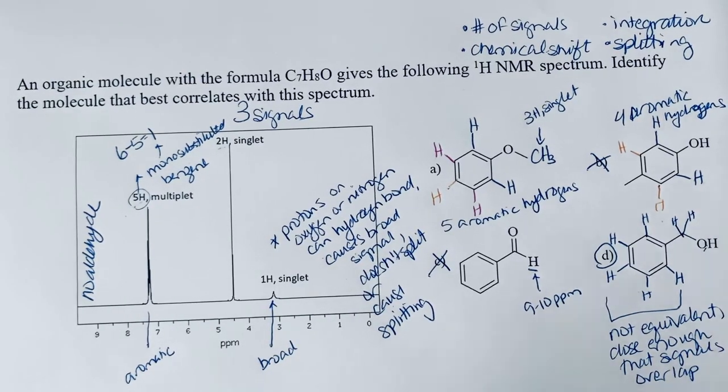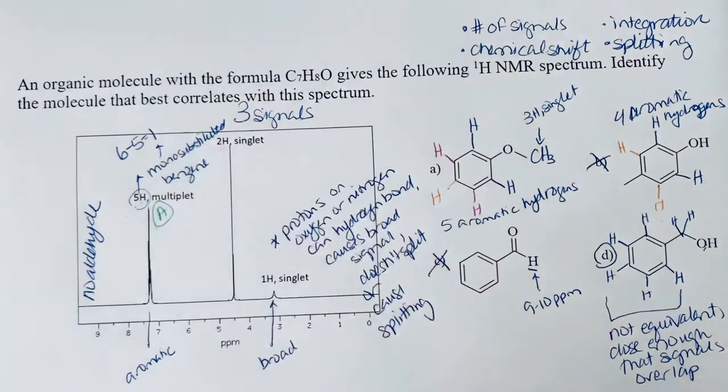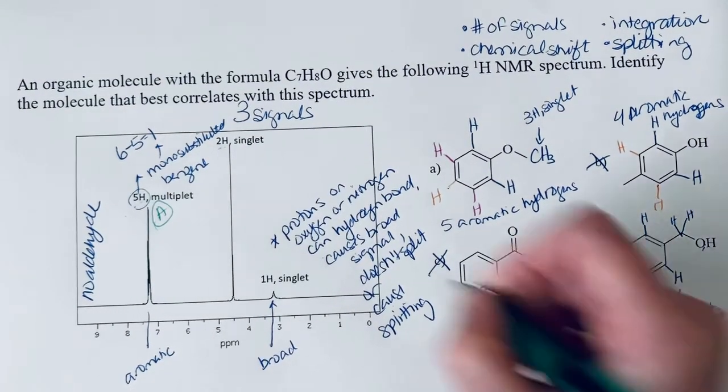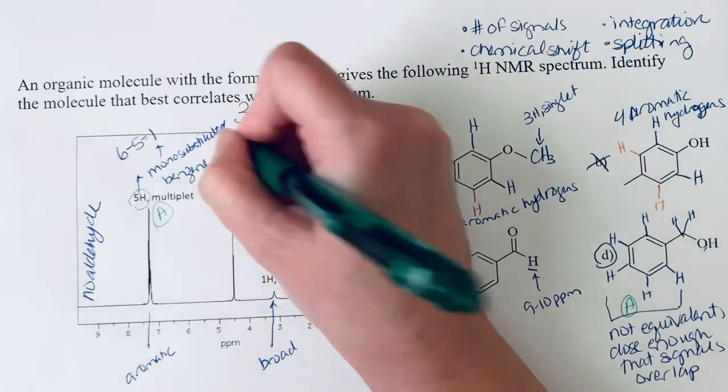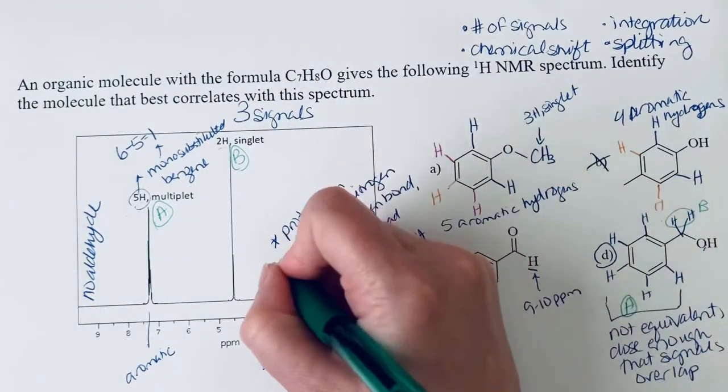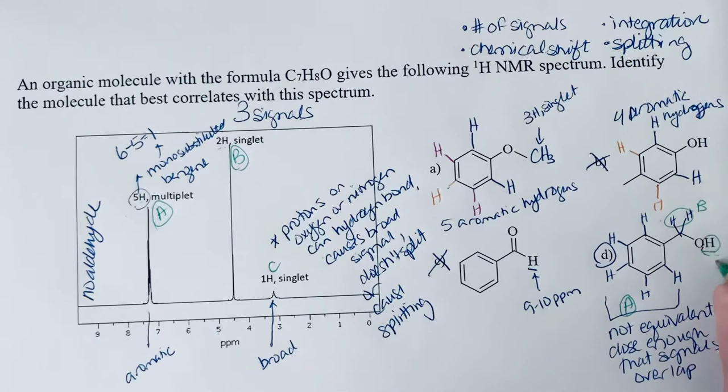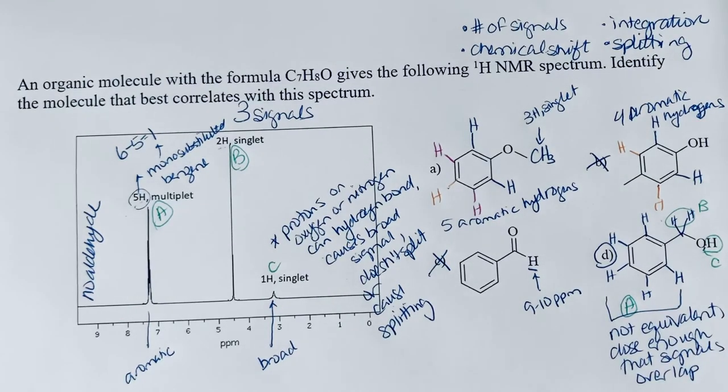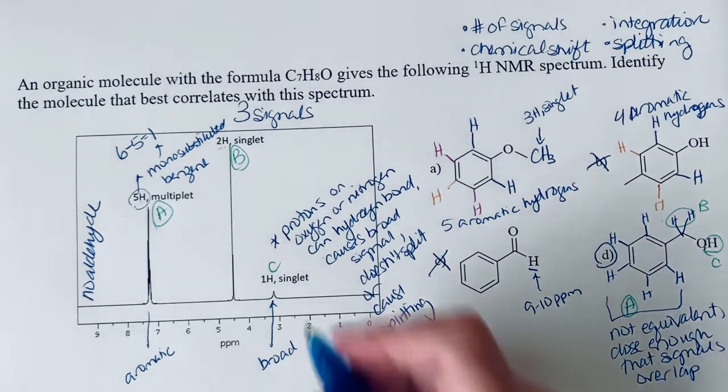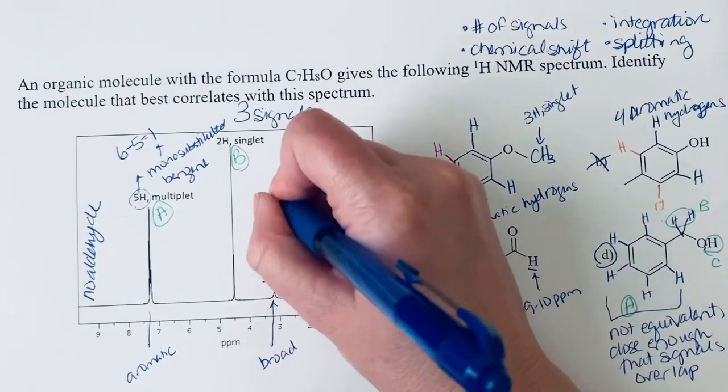So let's just label these. We've got A, so that's the benzene ring. B, these two hydrogens are these two hydrogens. And C, this signal right here is C. And one final thing to note about this alcohol, another way that we could test for this, is to see if it exchanges with D2O.